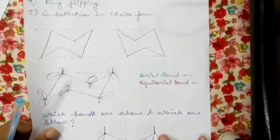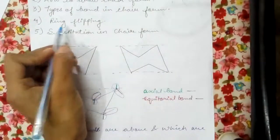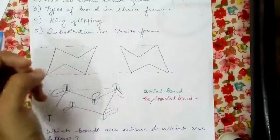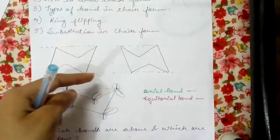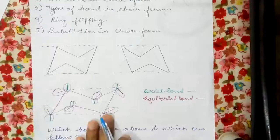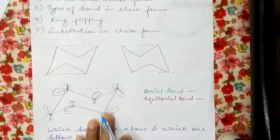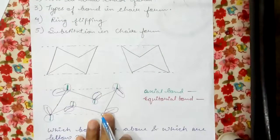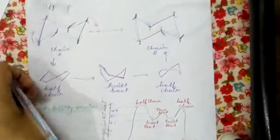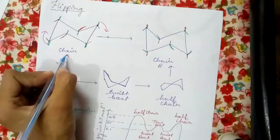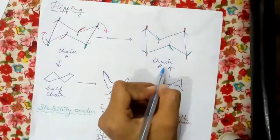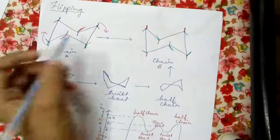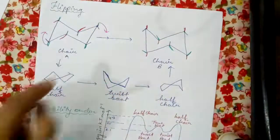Now there is one more thing which we usually see: ring flipping. What is ring flipping and why does this chair form ring flip? We are very aware that everything in nature needs to get stable. So in order to get stability it flips. How does this flipping occur? Let us assume this is chair A and this is chair B. From chair A to chair B we need to flip - this can be achieved by flipping.